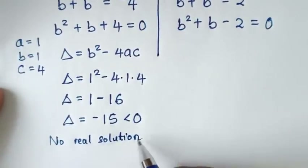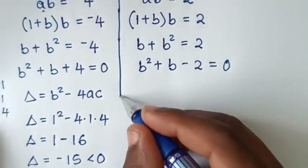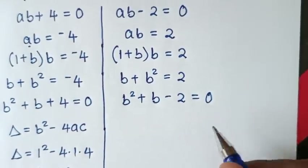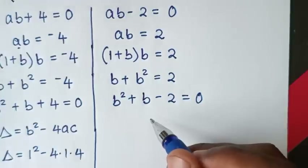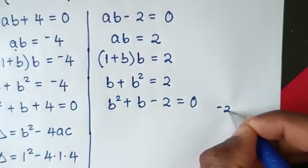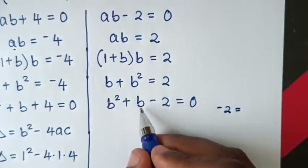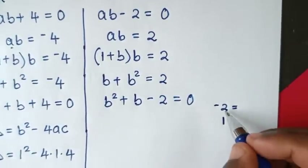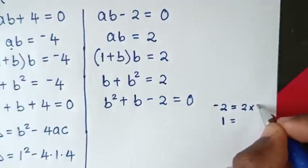Then if there is no real solution, I will reject this solution. Then we can choose to solve from the second solution. From this second solution, we can see it can be solved by grouping and factorization, because the constant -2 is the product of 2×(-1).